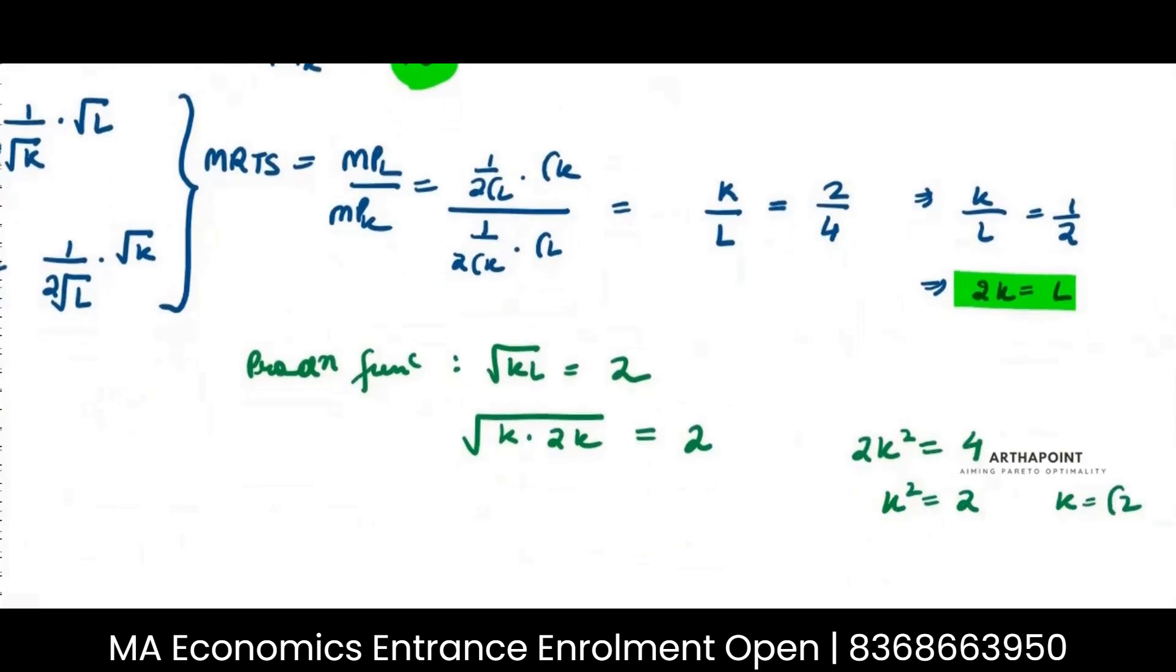So I will get K is equal to root 2, and what is L? L is 2 times of K, so 2 root 2. So I will get my K as root 2 and I will get my L as 2 root 2. Simple.